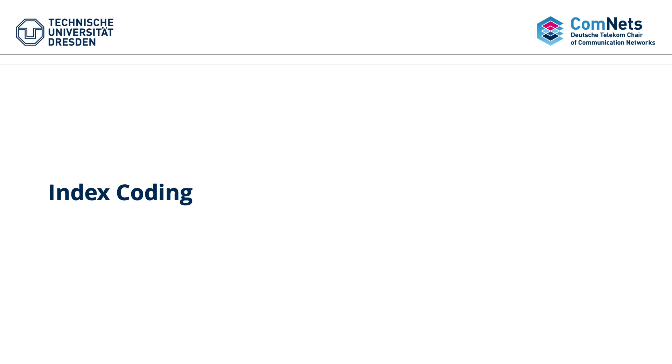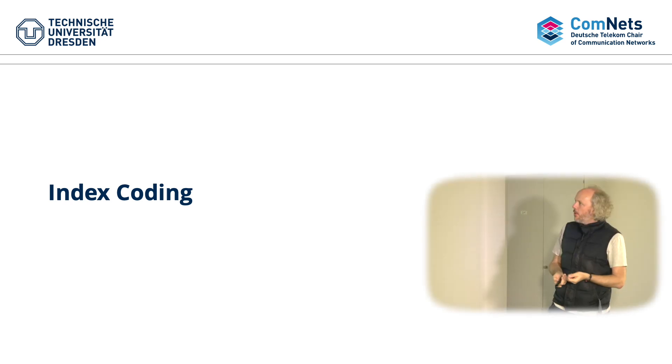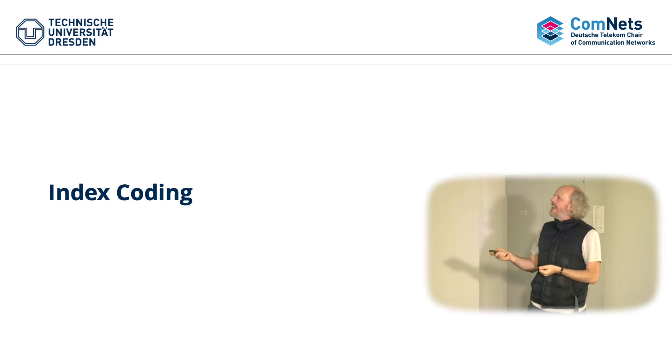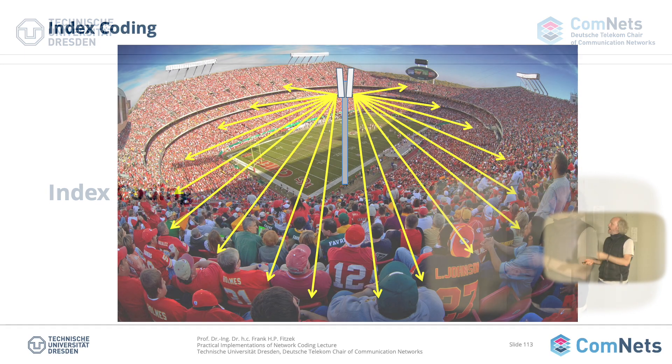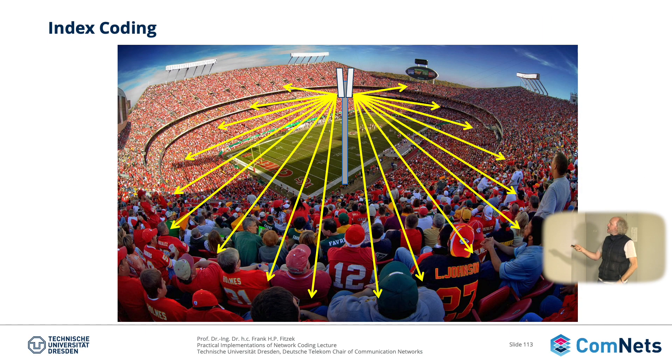There are other forms of network coding. One is called index coding. Imagine you have a football stadium and you would like to send something to the people.